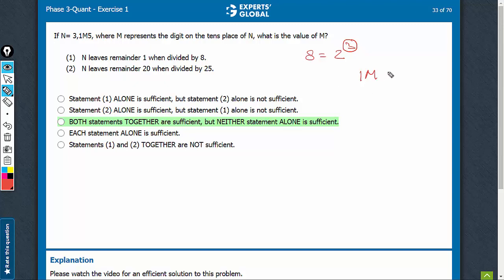That means 1M5 is leading to a remainder of 1. So what can M be? M could be 0. 105 with 8 gives a remainder 1.